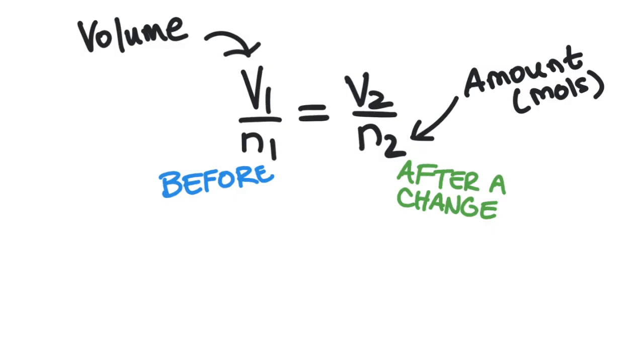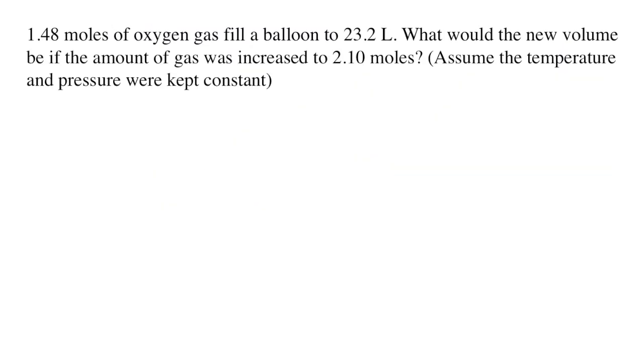This equation has four variables, and for chemistry homework, you are usually going to be given three of the variables, and then you'll solve for the fourth unknown variable. Here's the kind of homework question you would need to solve for your chemistry class.